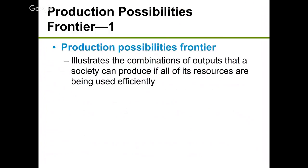The production possibility frontier — PPF — is important. Depending on the textbook it may also be called the production possibility curve, but they mean the same thing. It shows a combination of goods that a society can produce given available resources and available technology. A key word is 'can' — the PPF doesn't show what the economy is actually producing; it shows what the economy can produce, its potential.